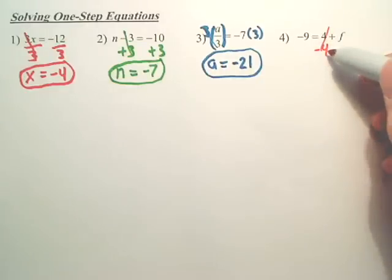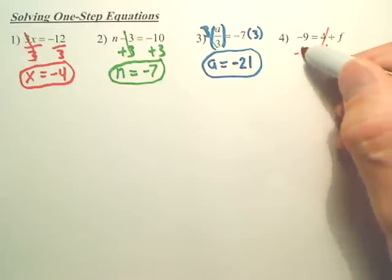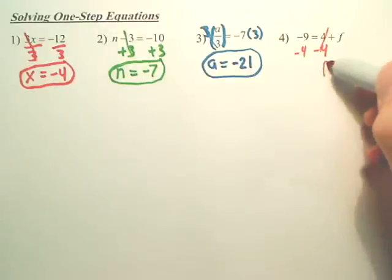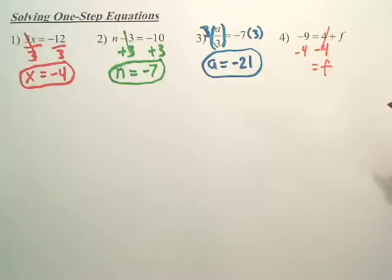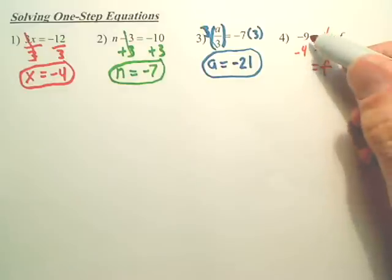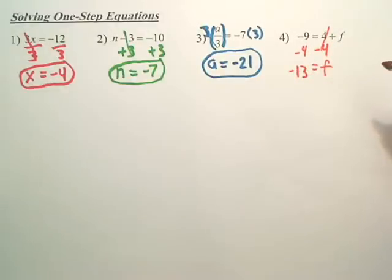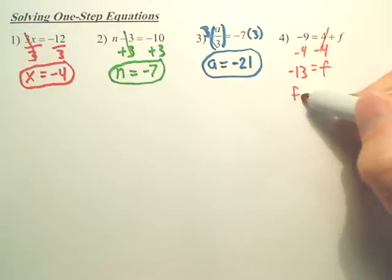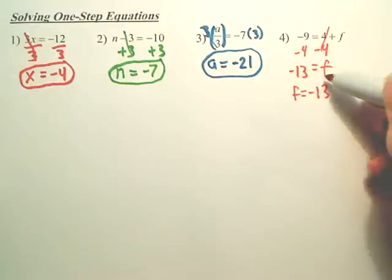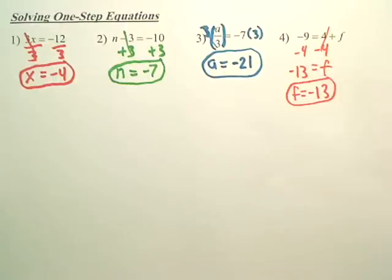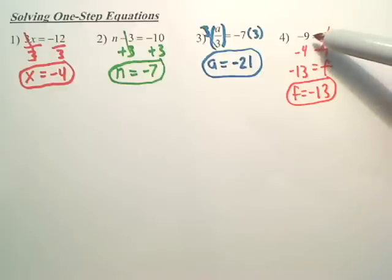And if I minus it over here, don't I have to minus it over here? So F equals negative 4 and negative 9 gives you... Now, could I rewrite that as F equals negative 13? So, does 4 plus negative 13 give you negative 9? Yeah.